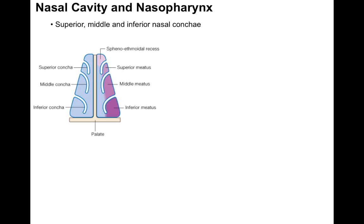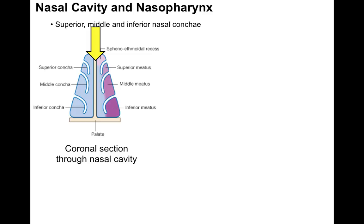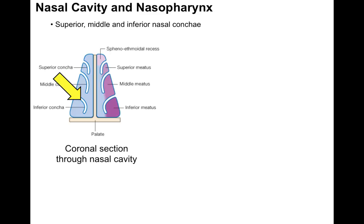I'm going to talk about the nasal cavity. The nasal cavity and nasopharynx have a number of structures. The first view we're going to look at to see the superior, middle, and inferior nasal concha is this coronal section through the nasal cavity, where the line down the middle shows the nasal septum separating our two parts of the nasal cavity. Each nasal cavity has a superior nasal concha, middle nasal concha, and inferior nasal concha, called turbinate bones.